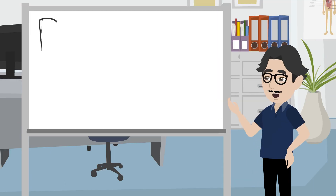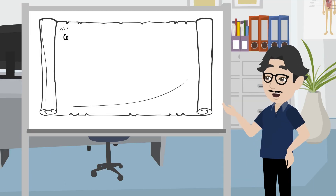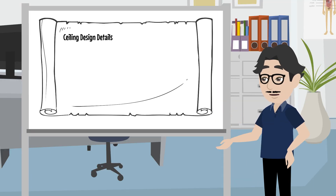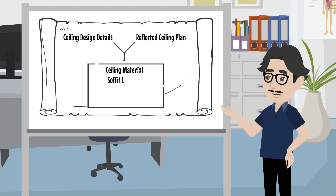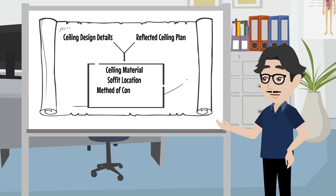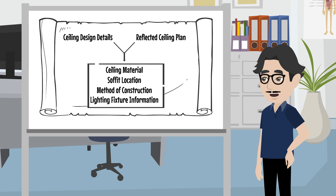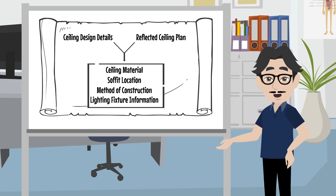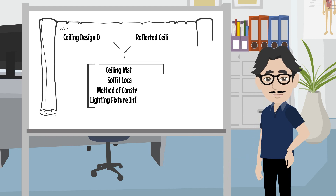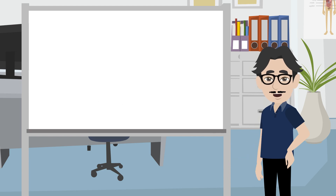These details go hand in hand with the reflected ceiling plan. Together, these drawings show the ceiling material, soffit location, method of construction and lighting fixture information. There are different types of methods for constructing a ceiling and in this video, we will focus on suspended ceiling construction.